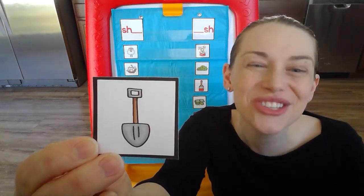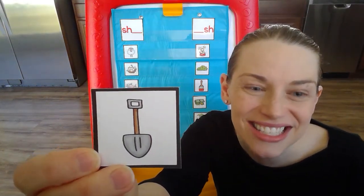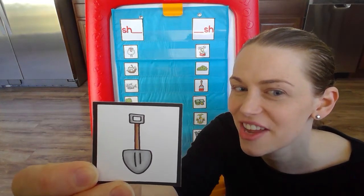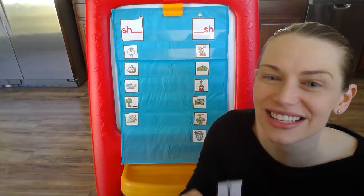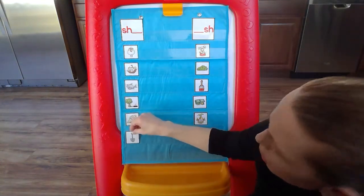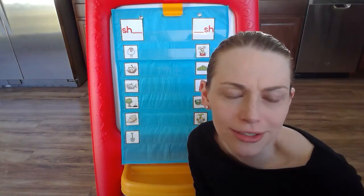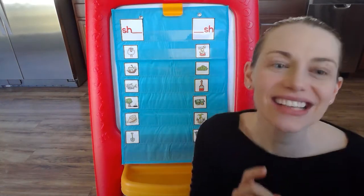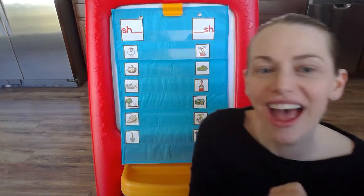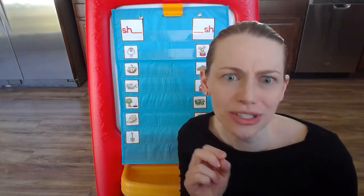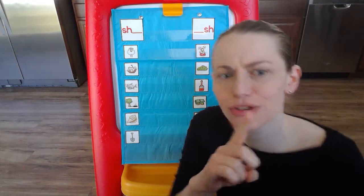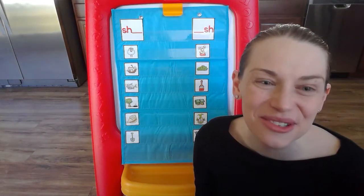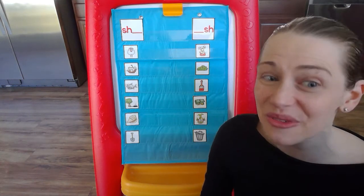Last card — shovel. Say it with me. Shovel. Does it start with a shh or end with a shh? Shovel starts with shh. It starts with S-H. What letters make the shh sound? All right, yell it out for me again and do that movement. Here we go. S-H-shh-shh. S-H-shh-shh-shh. One more time. S-H-shh-shh-shh. You guys are so fantastic.